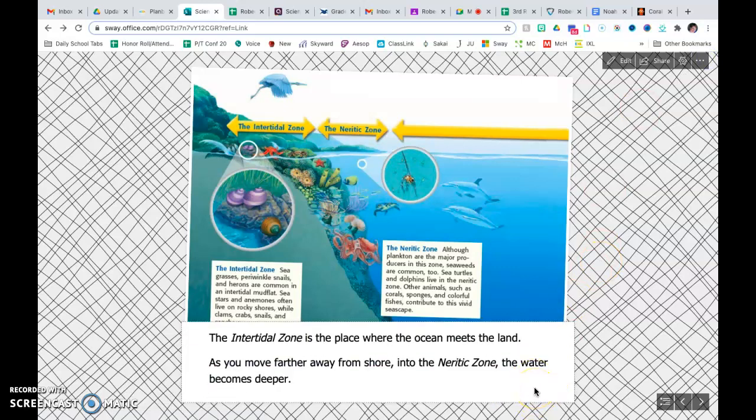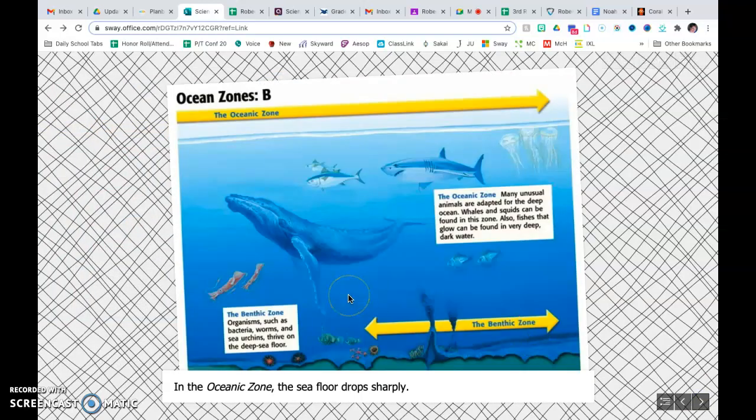As we learned with our food chain and our food web, plankton is very important. As we move on out, we have the oceanic zone. And this is where the sea floor just drops off.